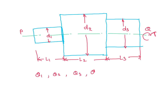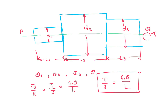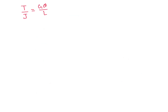Here we will use our formula: tau S by R equal to T by J equal to G theta by L. From here we will use T by J equal to G theta by L, where T is the torque acted, J is the polar moment of inertia, G is the rigidity modulus, theta is the twist, and L is the length of the shaft. From here we will get theta equal to T into L by G J.